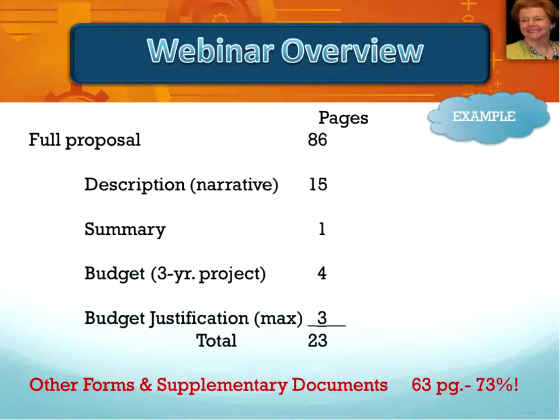Our desire is to help you better understand these forms and how to avoid errors frequently seen by program officers and reviewers. Careful preparation of forms contributes to a proposal that is more competitive overall. Forms are not a trivial part of your grant proposal. The numbers in this example are from an actual project proposal submitted to NSF in October 2014. The full proposal was 86 pages long, and the project description fills 15 pages — the maximum allowable length for an ATE proposal.